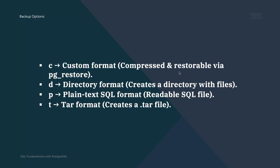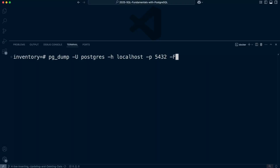Now we need to specify the format of the backup. There are a few formats: custom format — compressed and restorable via pg_restore; directory format; plain text SQL format for readable SQL files; and tar format to create a tar file. We'll use the -F flag with 'c' for custom format to start with, and then look at the other options once we've worked through some of the drawbacks.